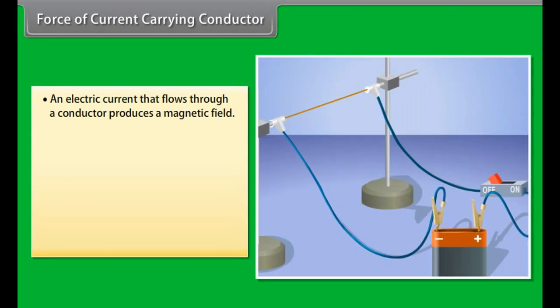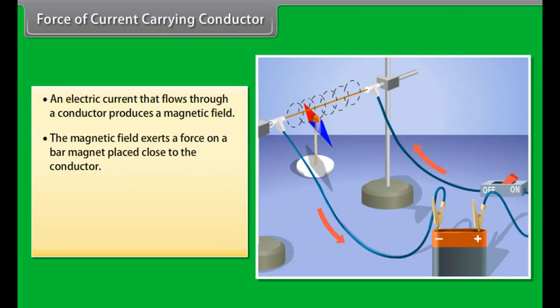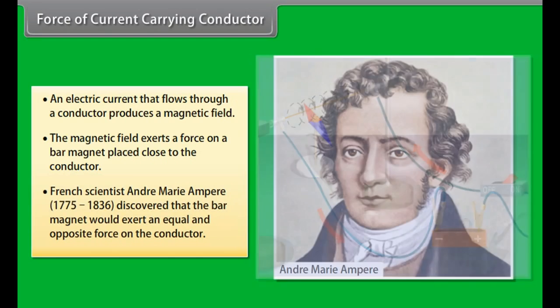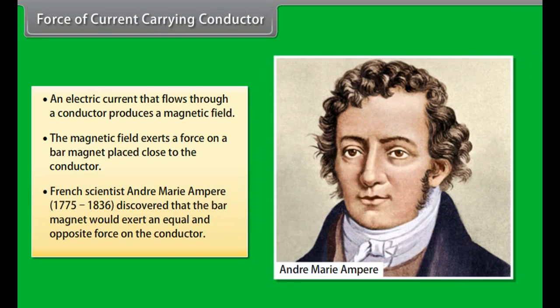Force of current carrying conductor. We have seen that an electric current that flows through a conductor produces a magnetic field. The magnetic field so produced exerts a force on a bar magnet placed close to the conductor. French scientist André-Marie Ampere, 1775-1836, discovered that the bar magnet would also exert an equal and opposite force on the conductor.